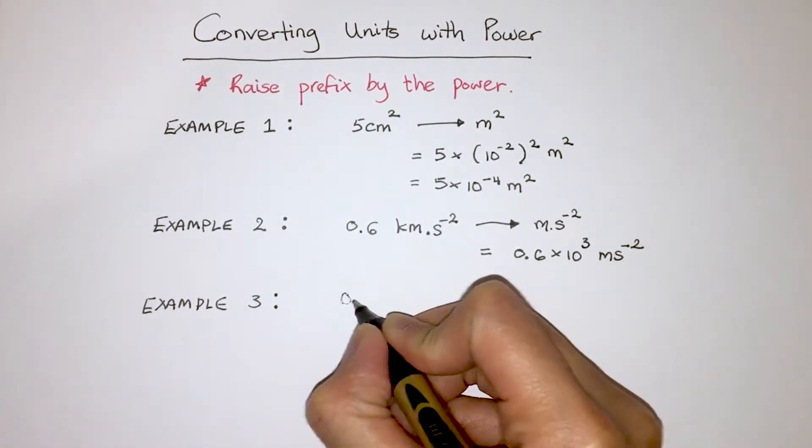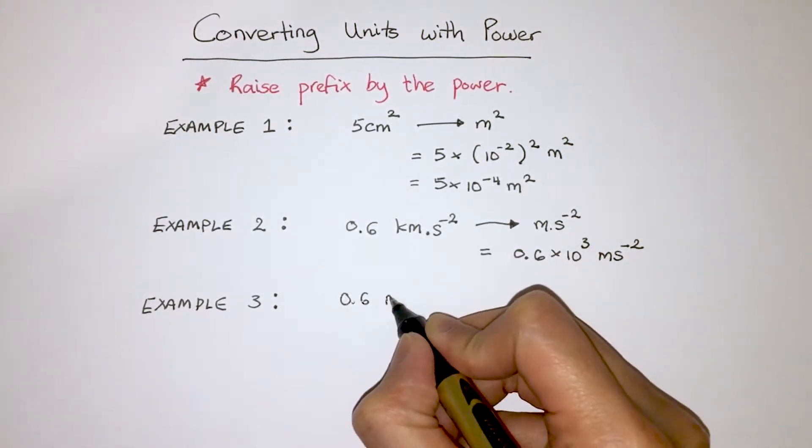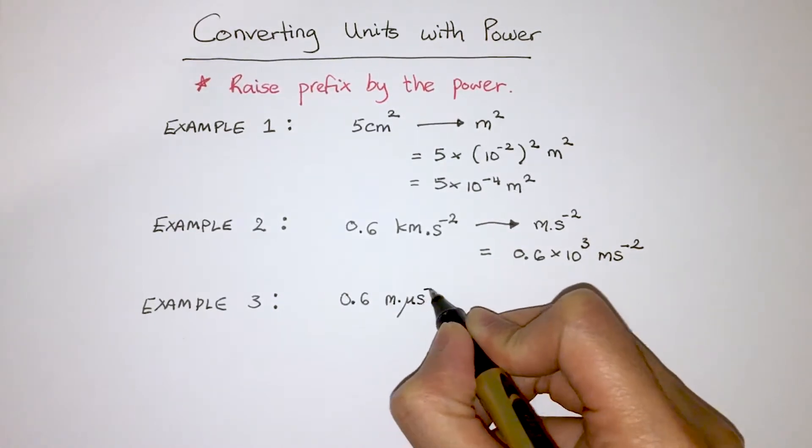Here's the last example. We have 0.6 meter microsecond to the minus 2. This is, again, a unit of acceleration.